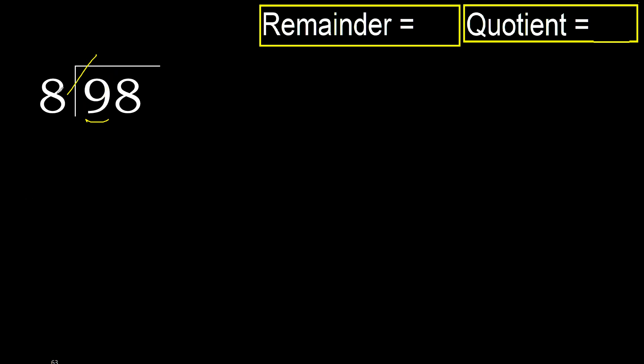8 multiplied by 2 is 16 — 16 is greater. Multiplied by 1 is 8, it's not greater. OK, subtract — remainder is 1.